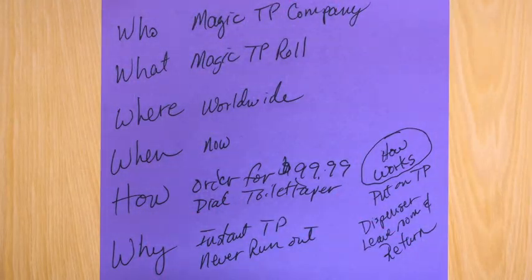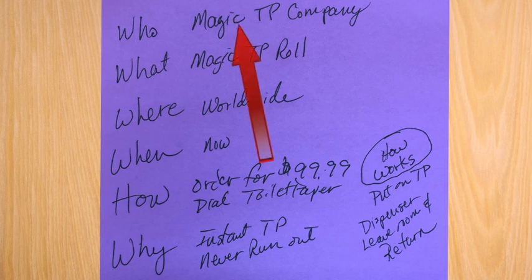All right, the first thing you need to do — and I jotted this down, I'll show this to you — is I put down: who, what, where, when, how, and why. Six things. And then I went through and filled these six things in.